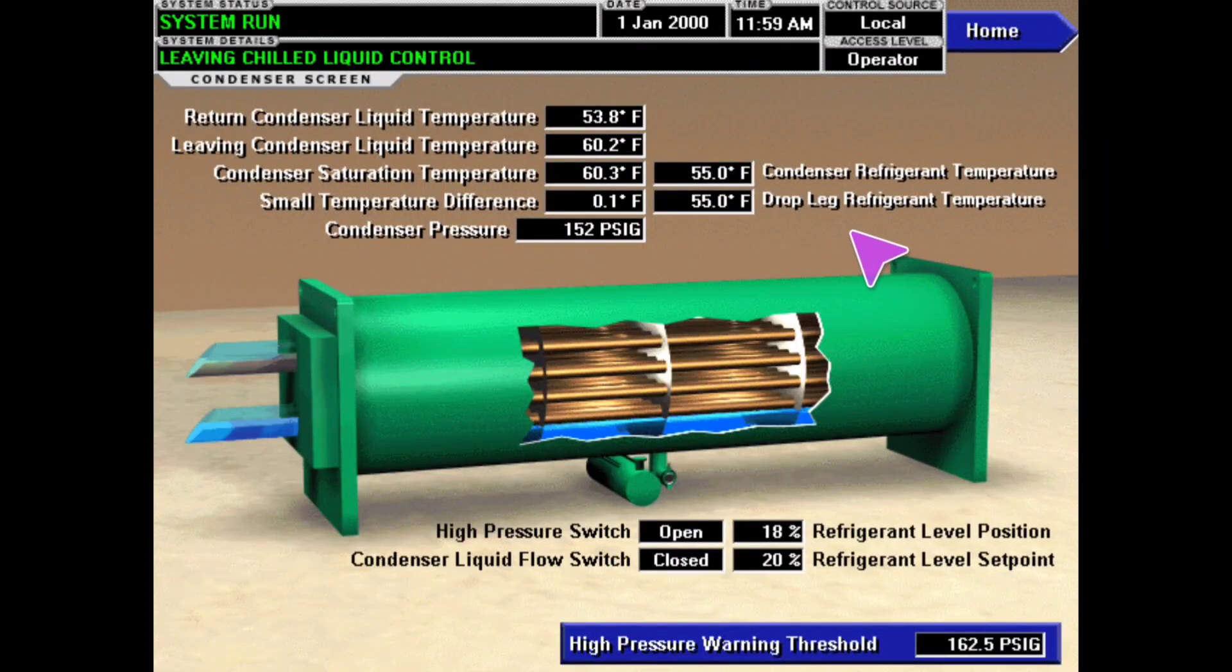Let's talk about chiller approach and how that impacts the system, how you calculate it, how you can use it, and just my overall thoughts and experience on it. Approach is the ability for your heat exchanger to exchange heat. It's a heat transfer rate where we're seeing how well the heat in the refrigerant on the outside of these tubes is able to transfer to the inside of the tubes and hit the water.